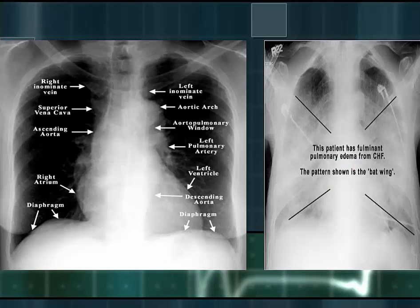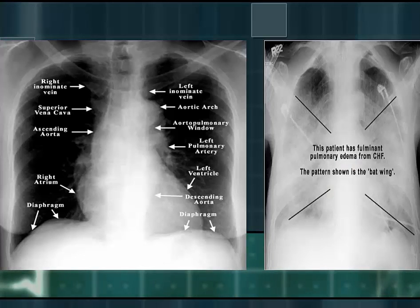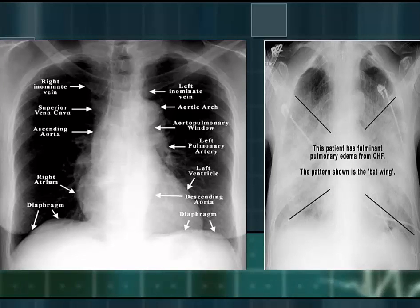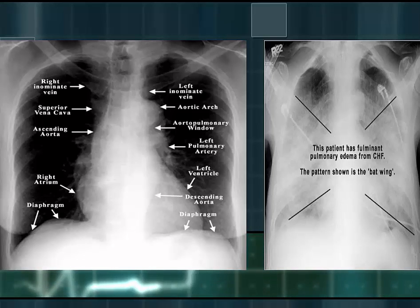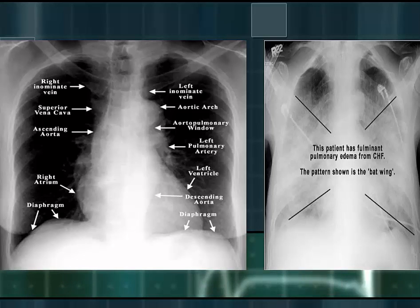The image on the left shows mediastinal and cardiac margins on a chest x-ray. The one on the right — not so good — shows fulminant pulmonary edema from congestive heart failure.